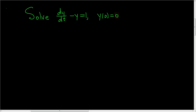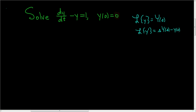In this video, we're going to solve a simple initial value problem using Laplace transforms. For notation, the Laplace transform of y we'll call big Y of s. It can be shown that the Laplace transform of y prime equals little s times big Y of s minus little y of 0. There are similar formulas for higher order derivatives, but in this problem we only have the first derivative, so no need.